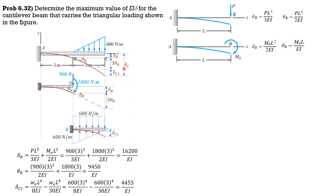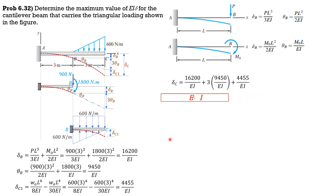Finally, the maximum deflection delta C = delta B + 3 × theta B + delta C1 = 16200/EI + 3 × 9450/EI + 4455/EI. Therefore EI × delta C = 49,005 N·m³ downward.